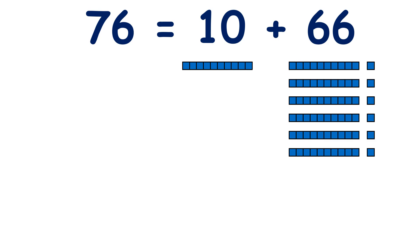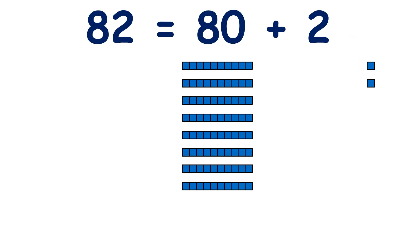Now let's look at one more number. So with 82, we can partition 82 into 80 and 2. How else can we partition the number 82?